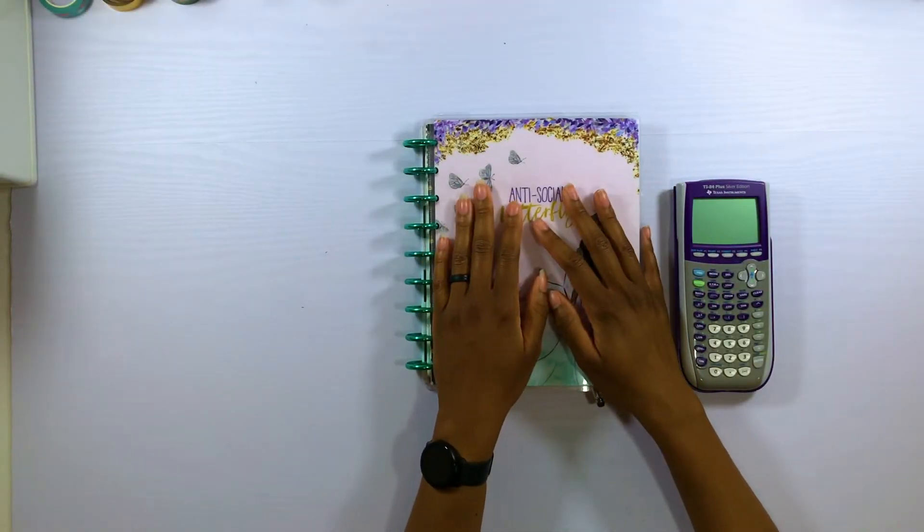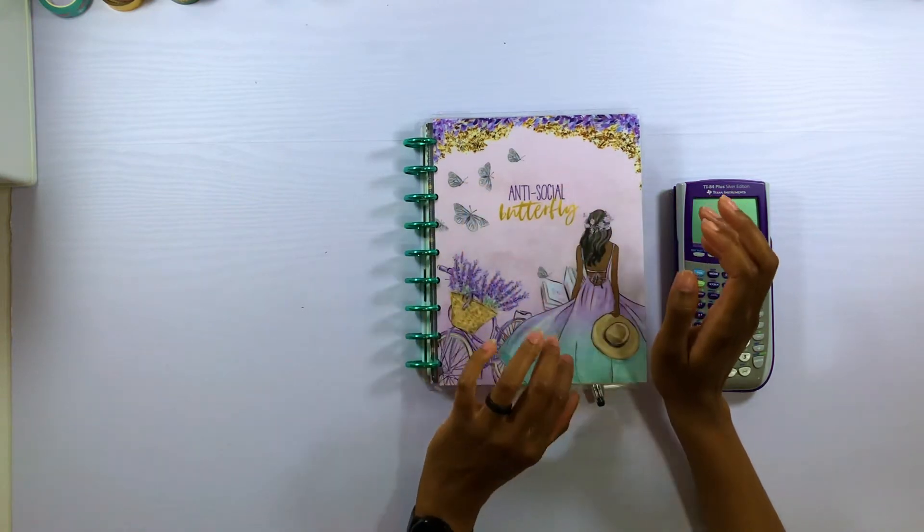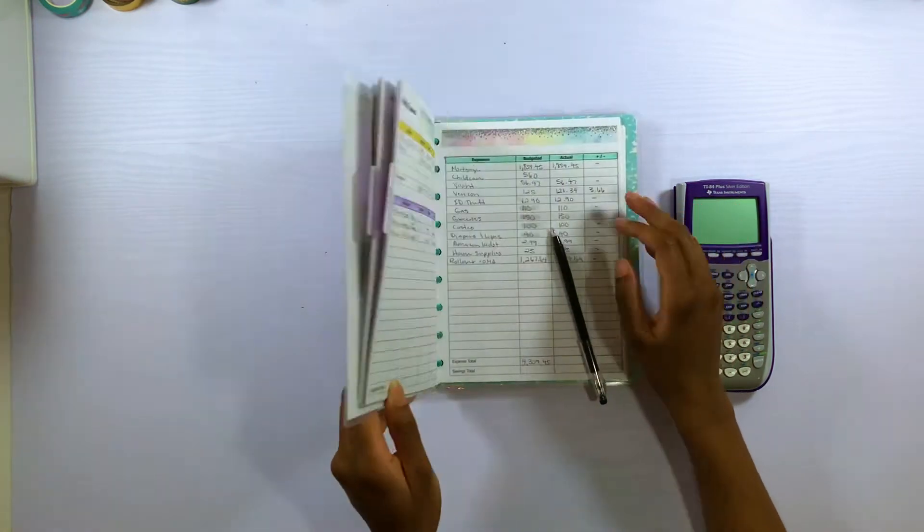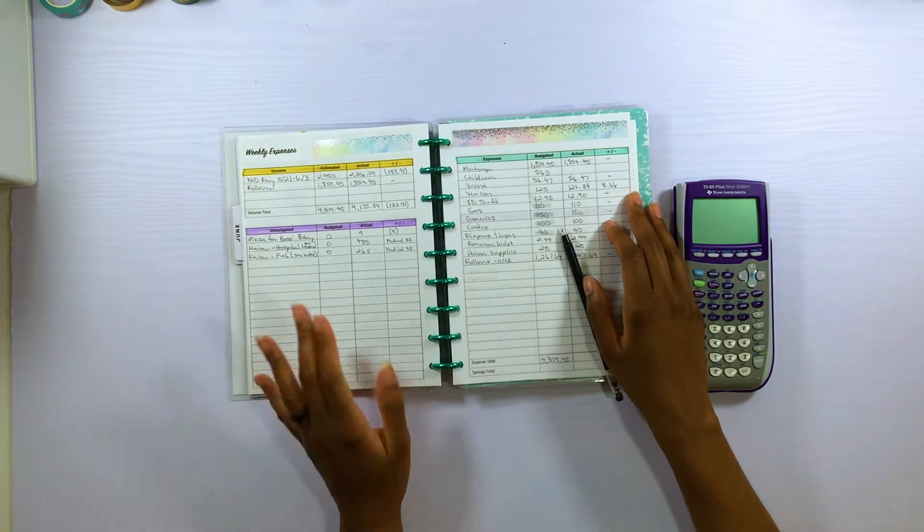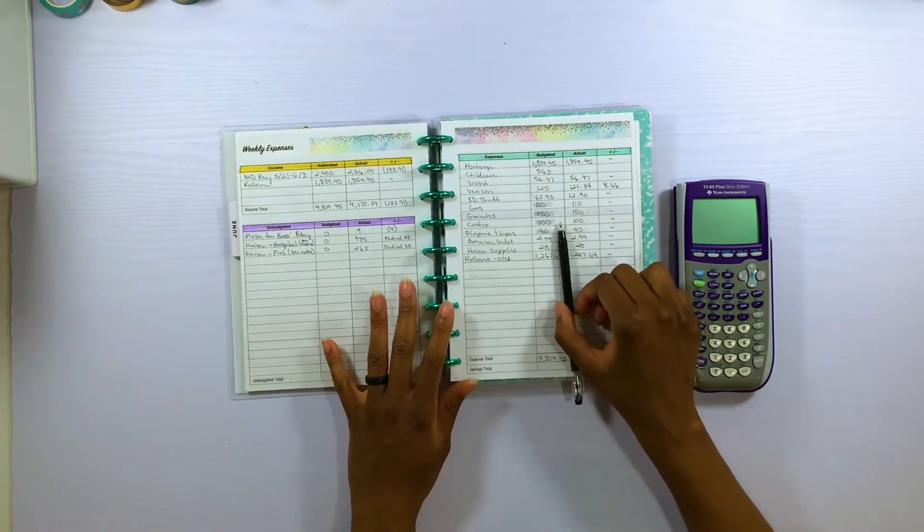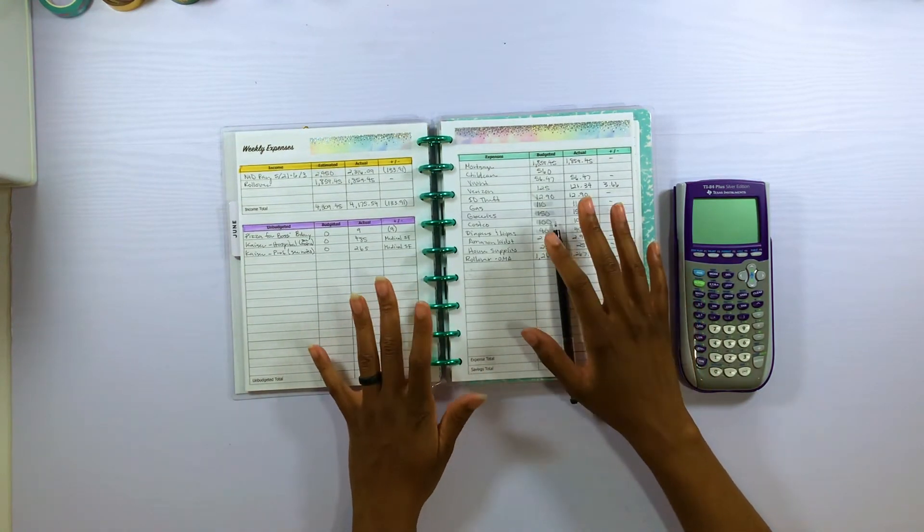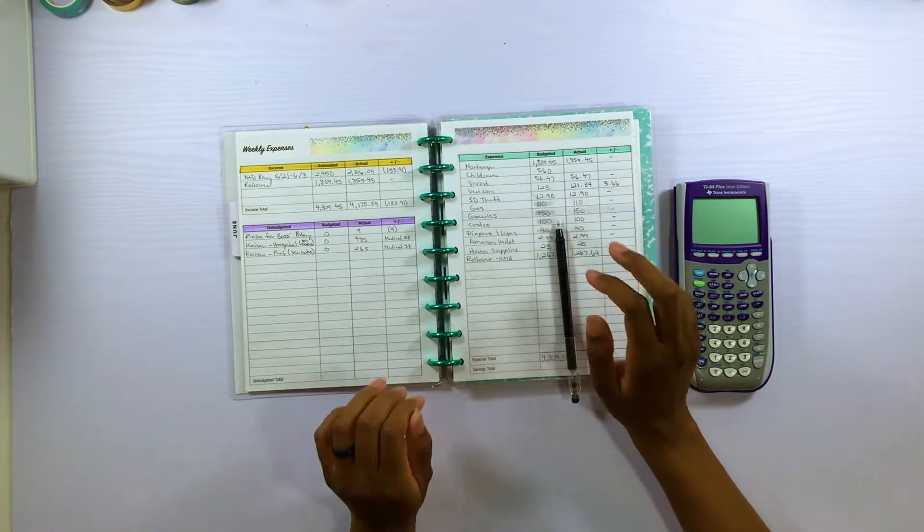Hello and welcome back to my channel. For those of you who are new, my name is Randacia or Randy for short. In today's video we are going to be closing out my June budget number one and setting up my June budget number two. So let me zoom you guys in and I'll get started.